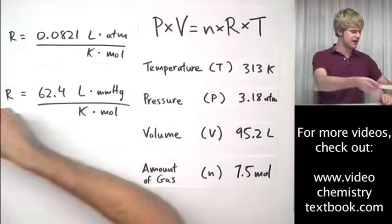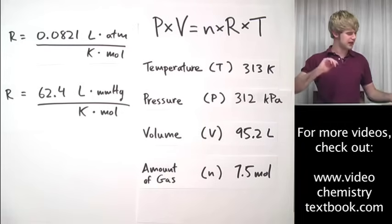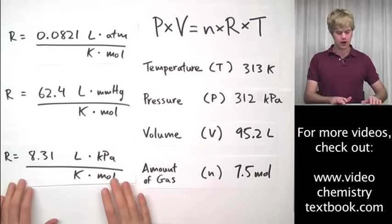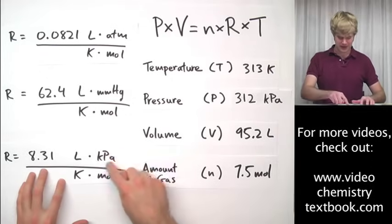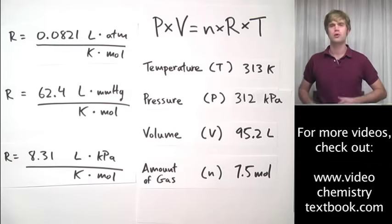Let's say that instead of millimeters of mercury, my pressure was given to me in kPa. I would then use this value of R so that the units match. I've got kPa here, kPa here, and all the others are the same, so 8.31 for that.